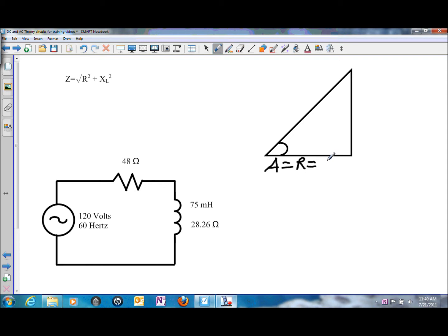And the resistance in this case is 48 ohms. And the opposite side of the triangle is the reactive side of the triangle, and in this specific circuit is inductive reactance. And the value of inductive reactance is 28.26 ohms.